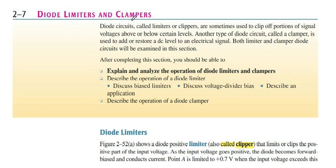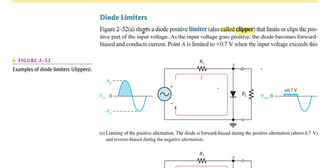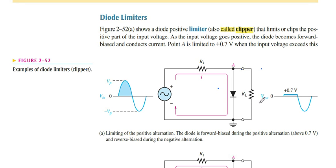Now the diode limiter and clamper. First, the diode limiter — what happens when we connect the diode in this form or in this circuit. There are two ways to get the output voltage. Our current has two paths. We see what happens when the diode is forward biased and reverse biased. When the positive cycle is passed through the circuit, the diode is forward biased. The current can flow through R1 and reach point A, where it has two paths: it can pass through the diode, or it can pass through the load resistance RL.